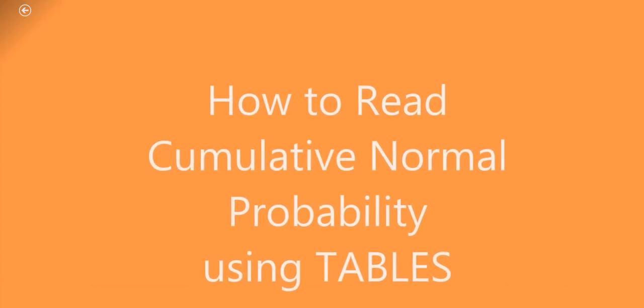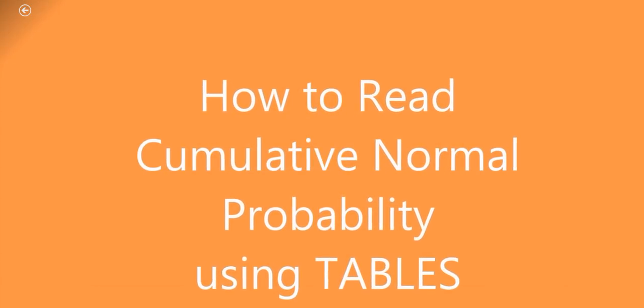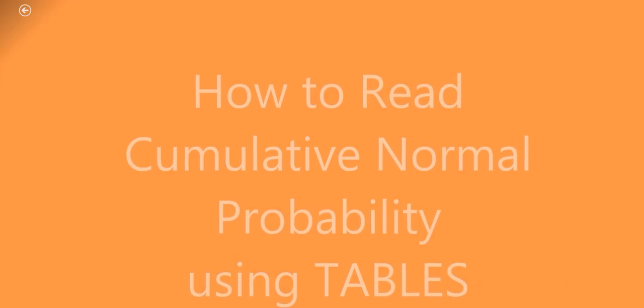Today we will try to understand how to find out the cumulative normal probability using tables. Suppose we are having an experiment in which the random variable x is having the value of 13 milliamperes.